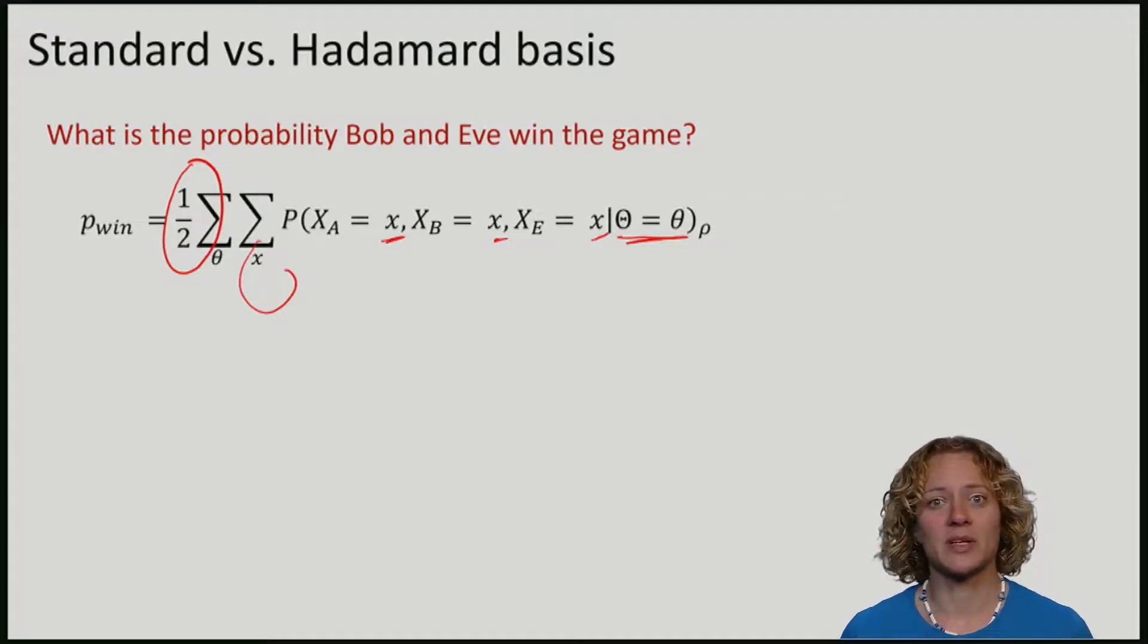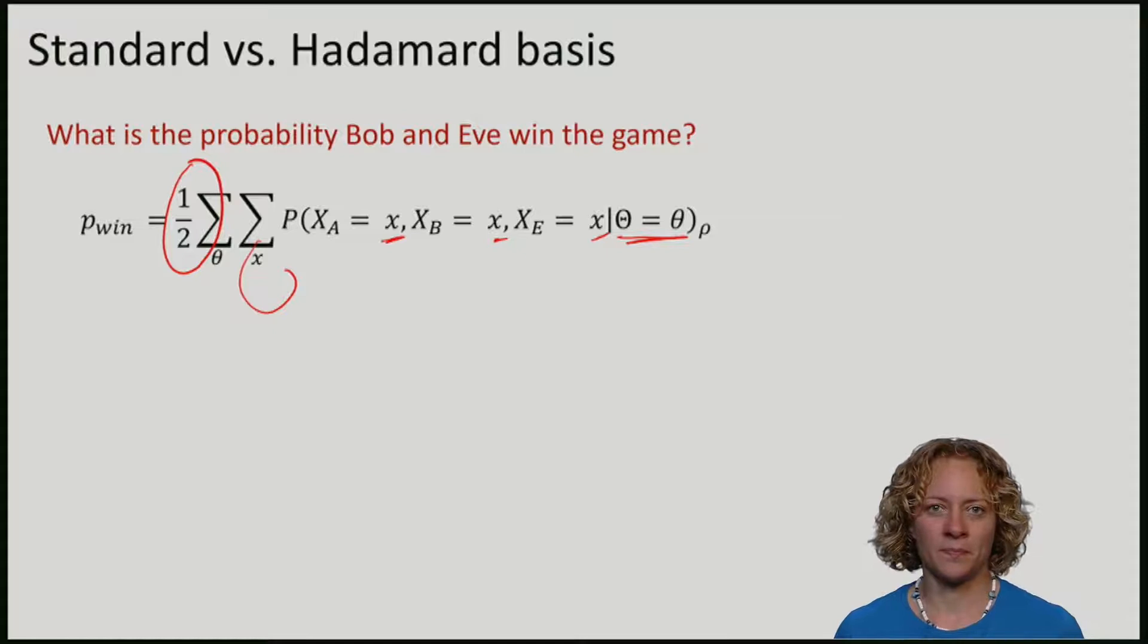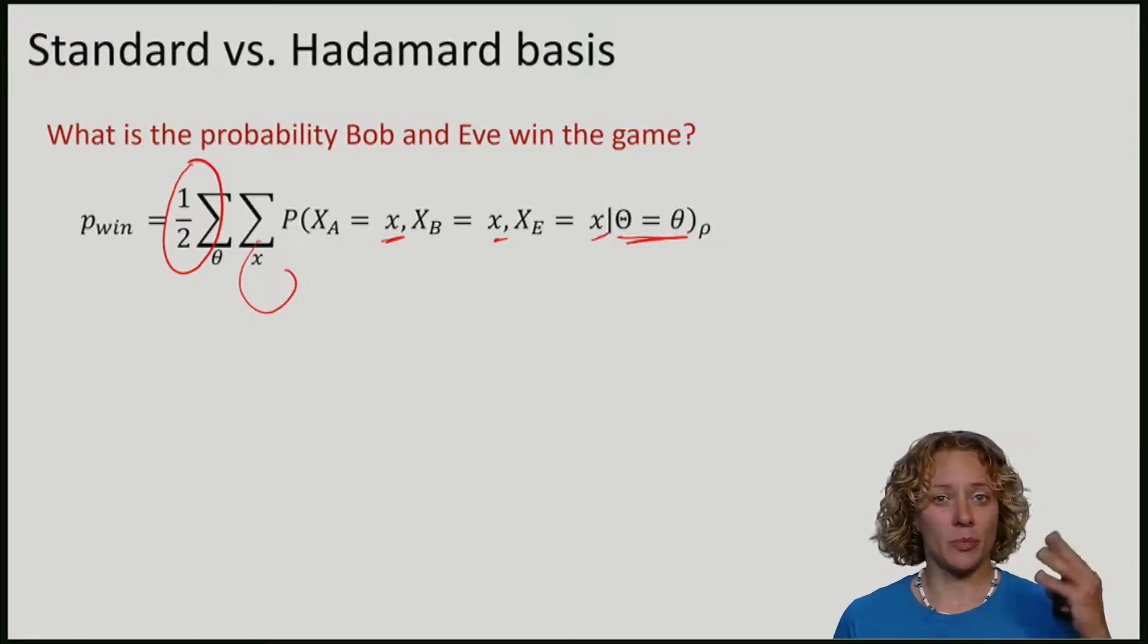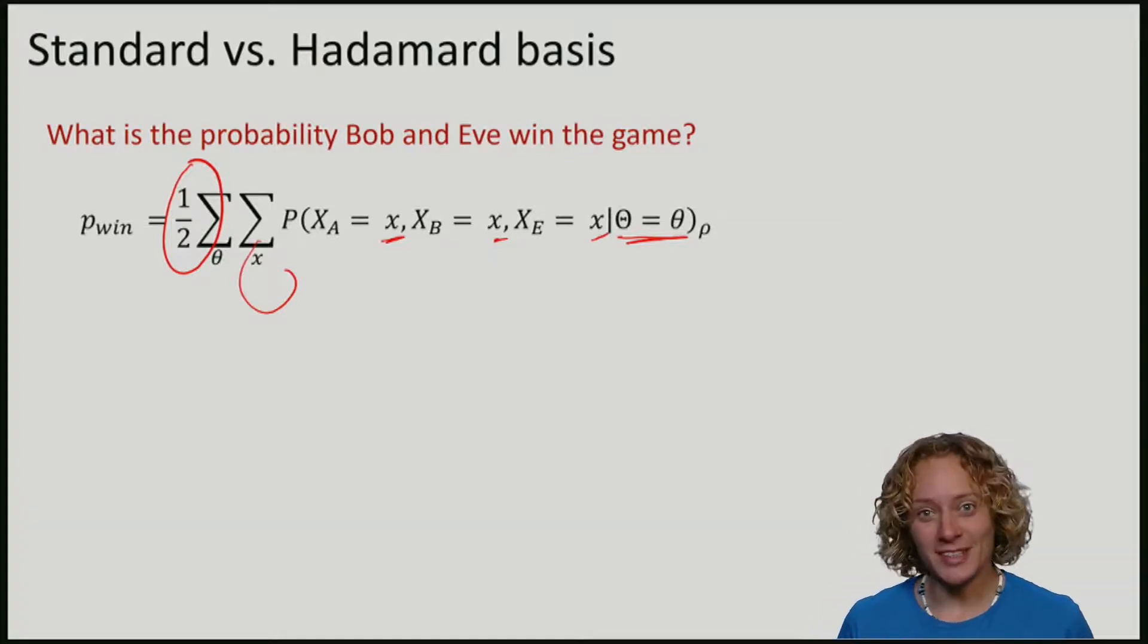So how can we evaluate this? We note that the measurements for Alice, namely, she measures in the standard or the Hadamard basis. We also know that Bob and Eve are two separate parties. So the measurement of Bob is going to be in a tensor product form with a measurement of Eve. This is a somewhat lengthy, but not too difficult calculation, which you can find in the lecture notes.